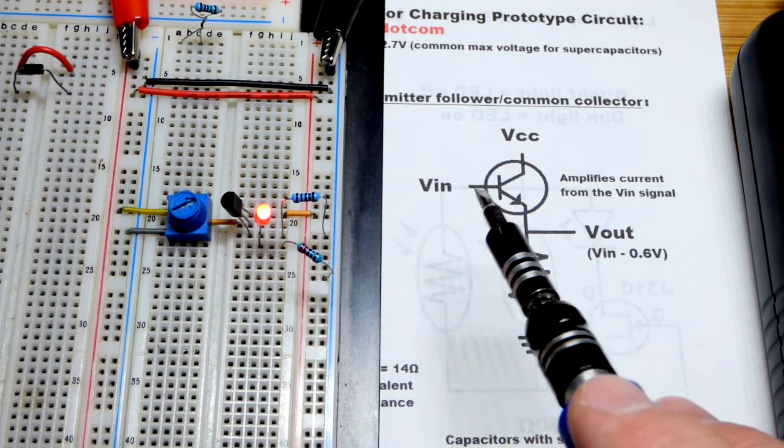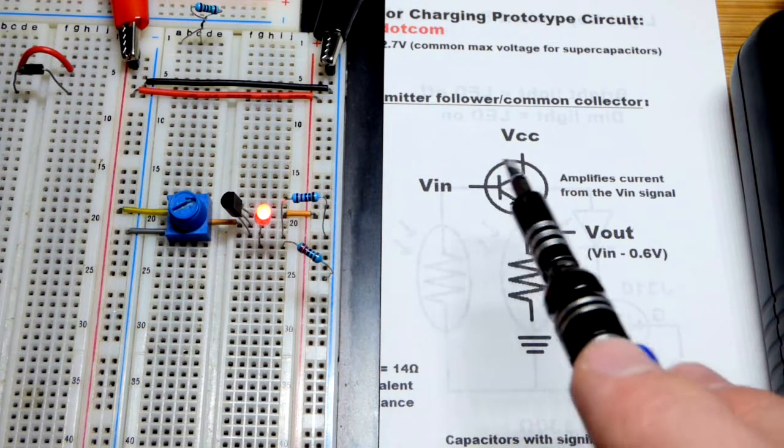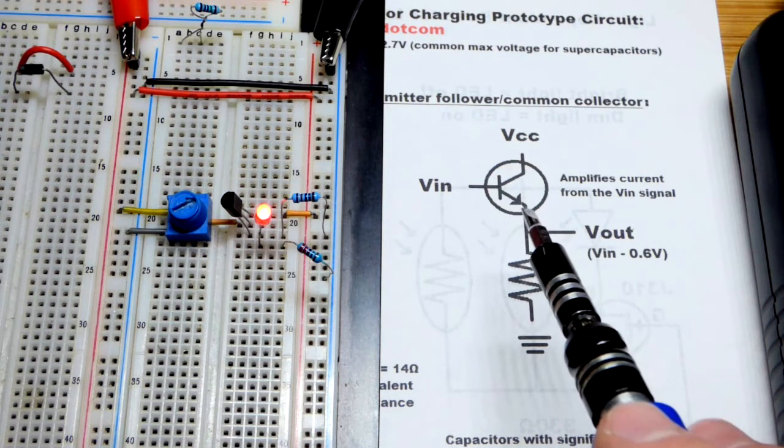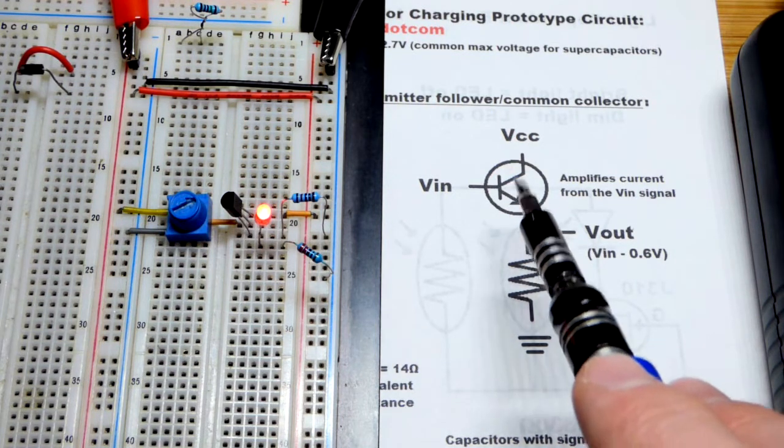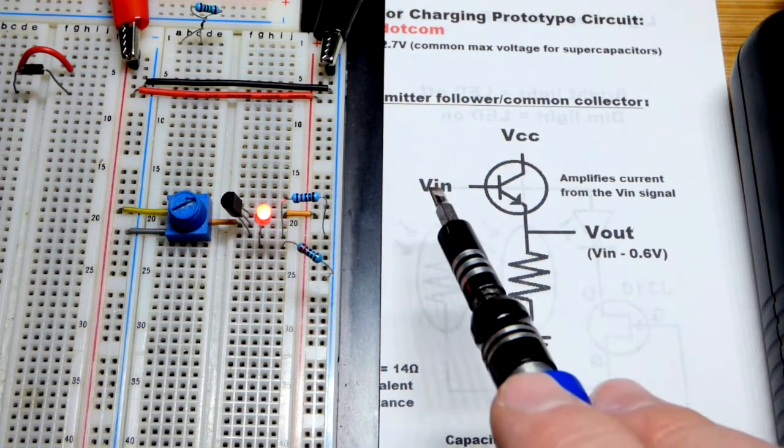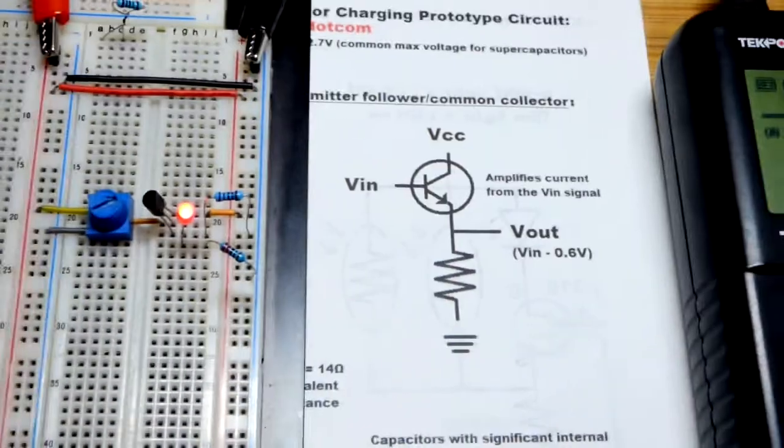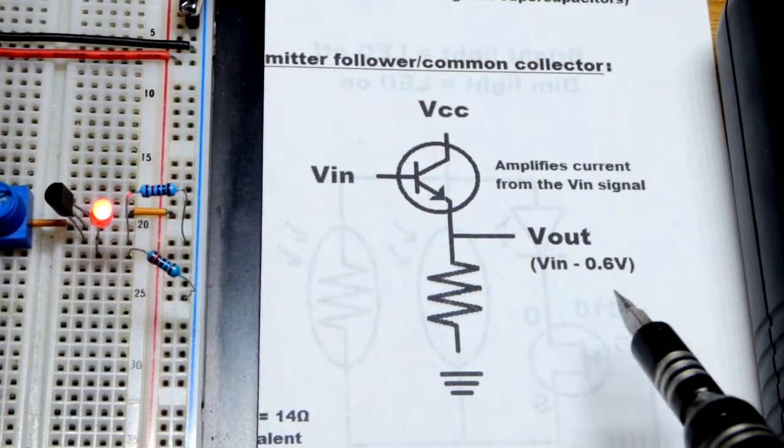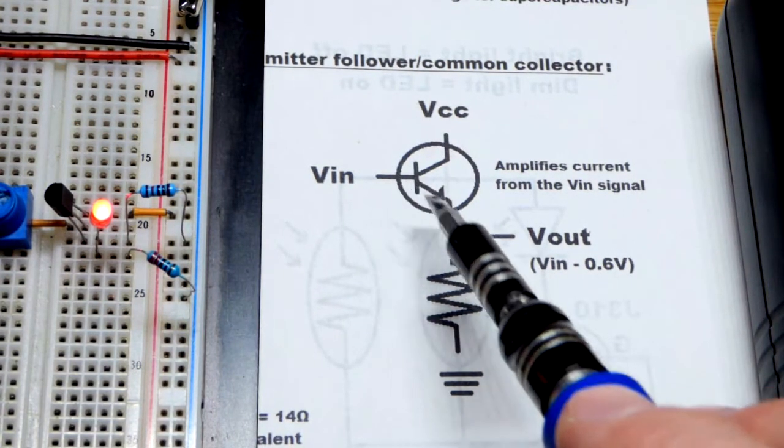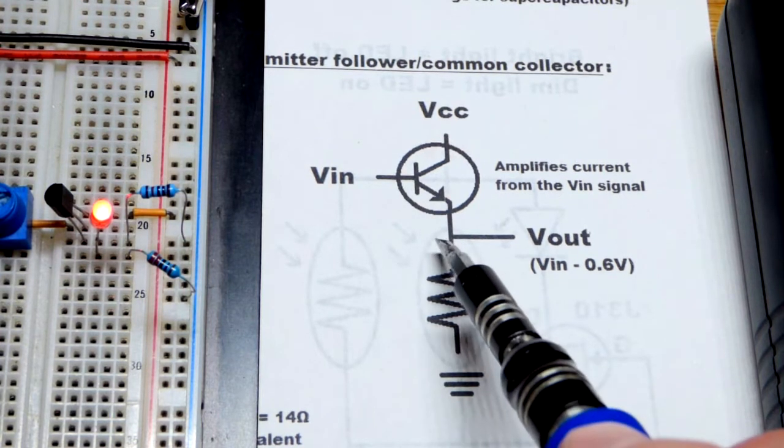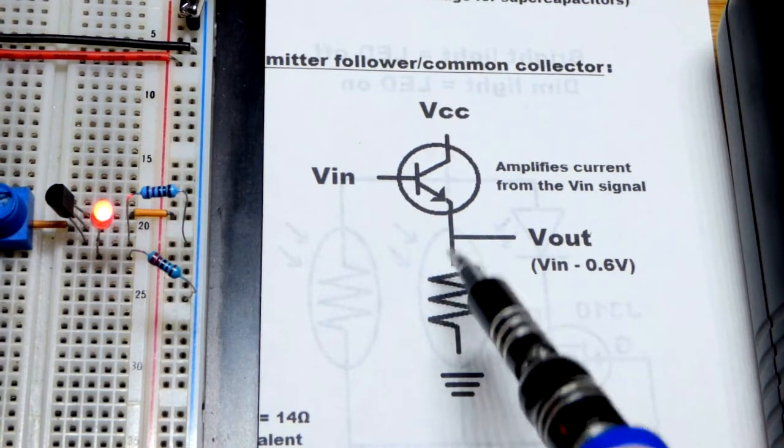So when you wire an NPN bipolar junction transistor as an emitter follower, the transistor provides the current to hold that voltage. The trim pot just sets the voltage, but you do lose about 0.6, 0.7 volts approximately due to the base to emitter diode drop.